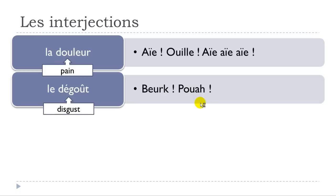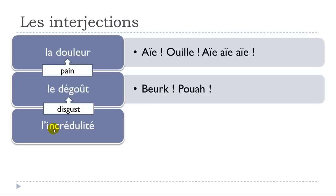When talking about LE DÉGOÛT — disgust — you can use BEURK and then POUAH.